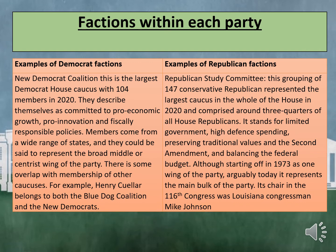Another example of a Democrat faction is the New Democrat Coalition, the largest Democrat House caucus with 104 members in 2020. They describe themselves as committed to pro-economic growth, pro-innovation, and fiscally responsible policies. Members come from a wide range of states and could be said to represent the broad, middle or centrist wing of the party. There is some overlap with other caucuses — for example, Henry Killua belongs to both the Blue Dog Coalition and the New Democrats.